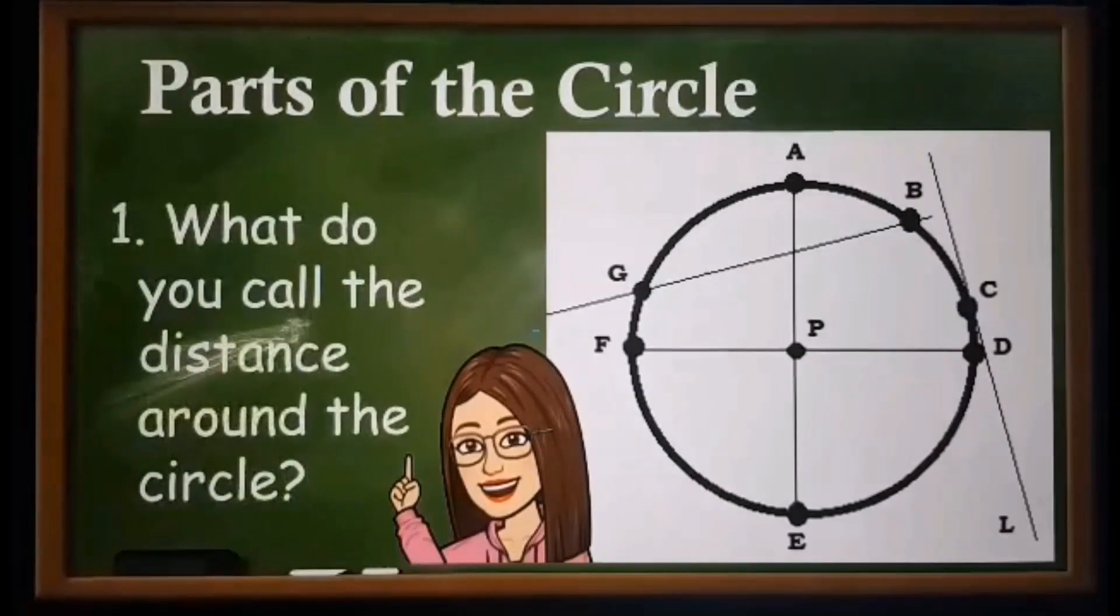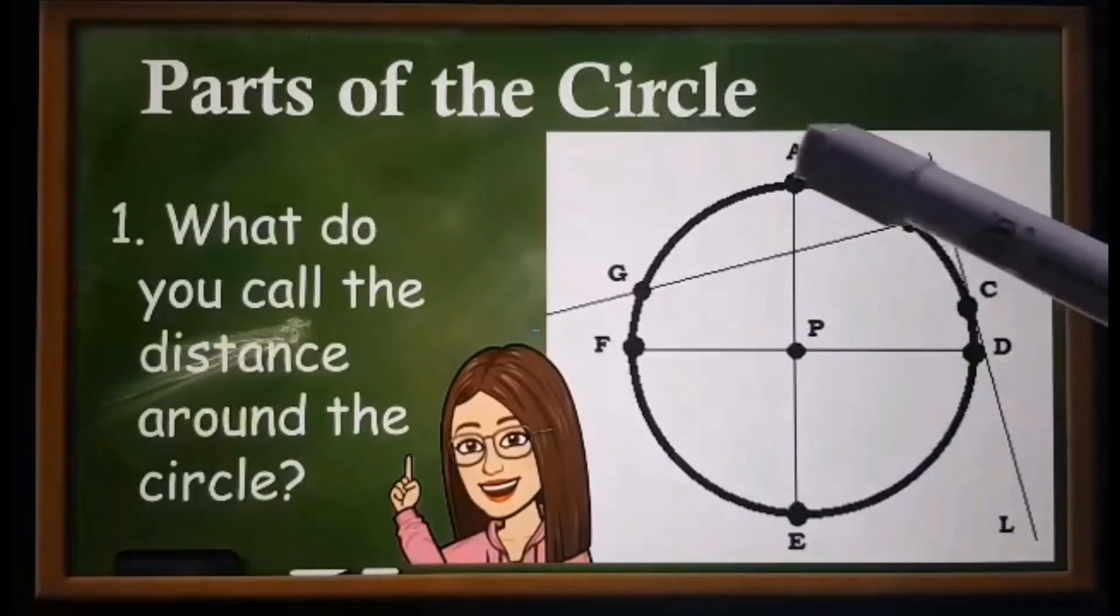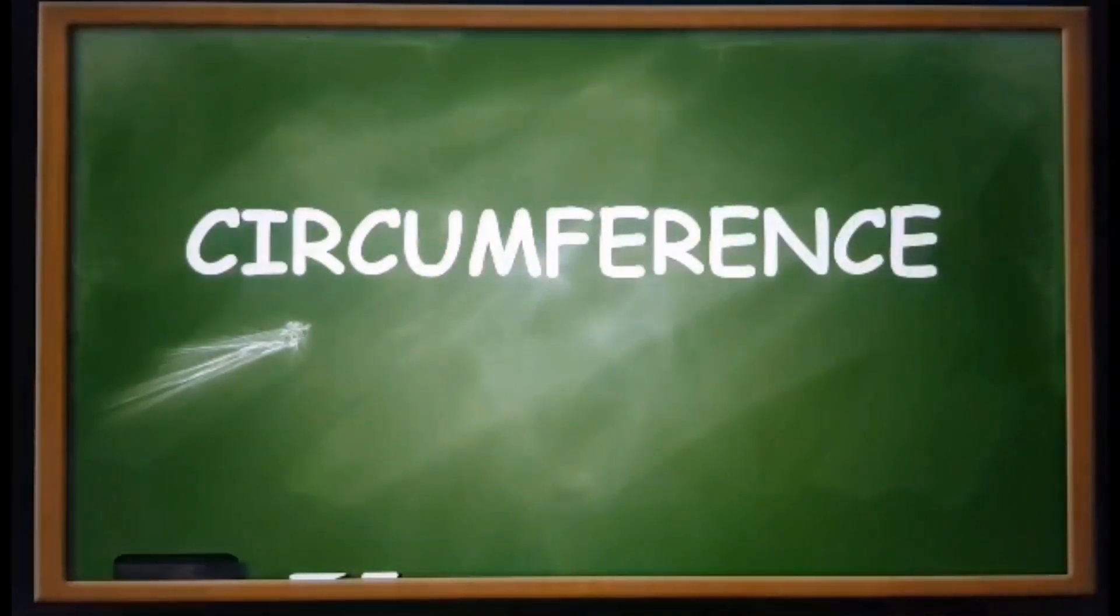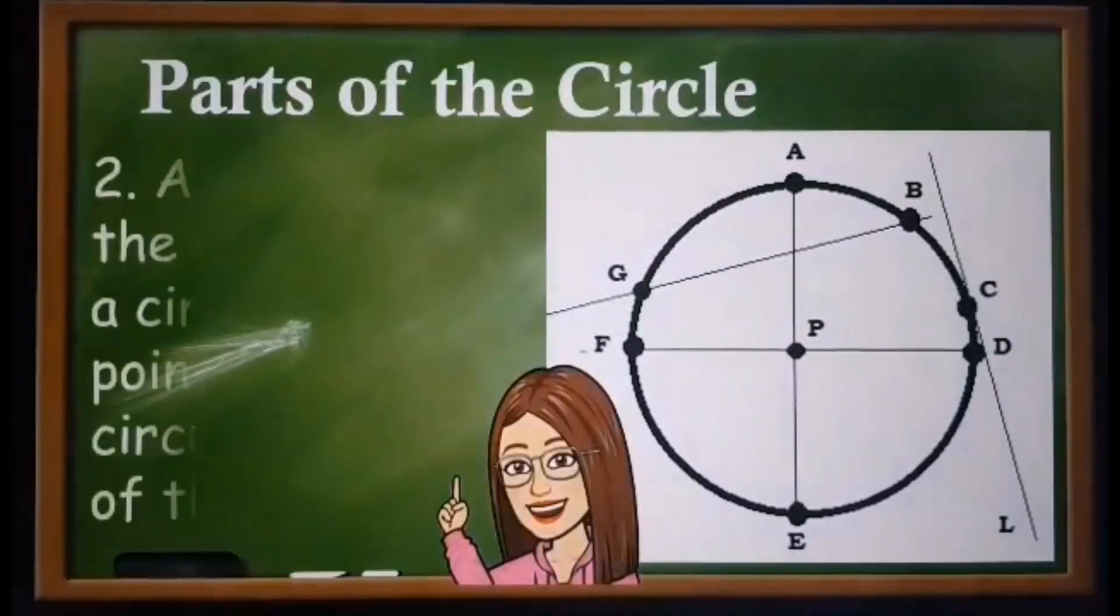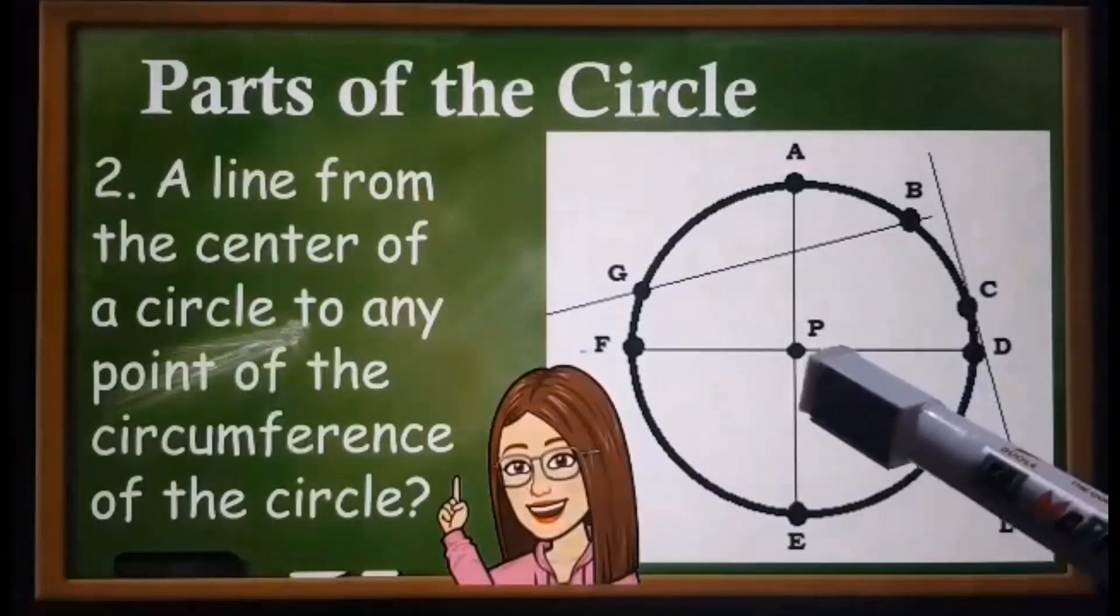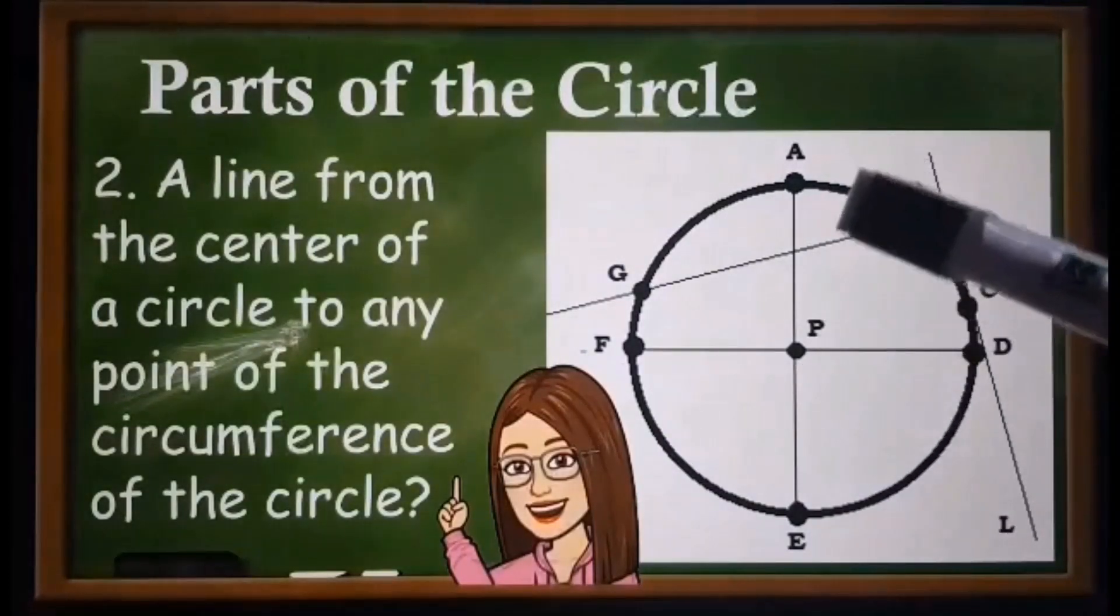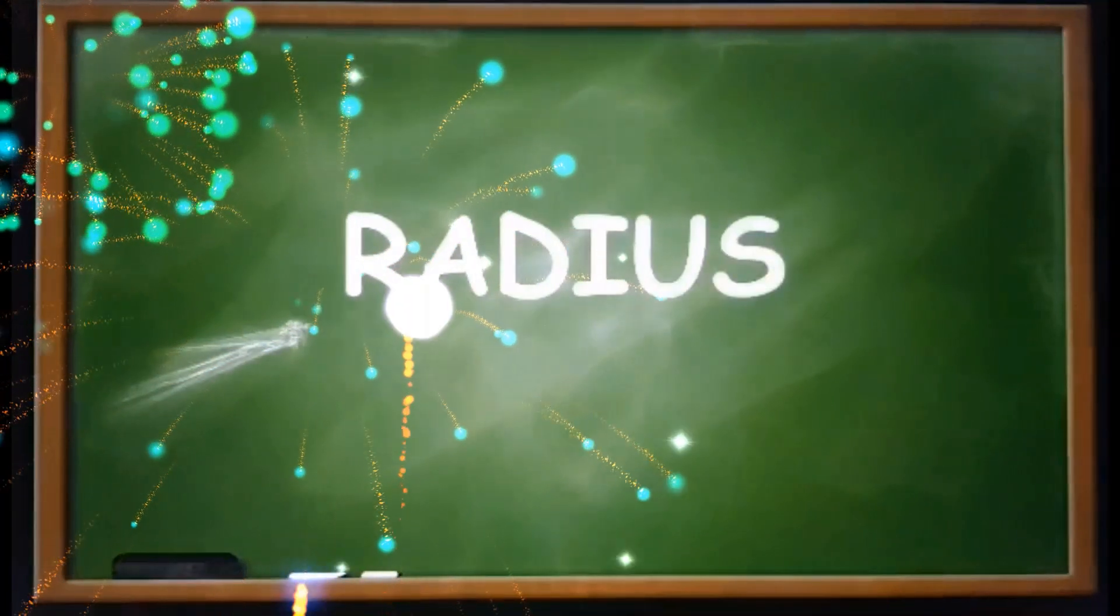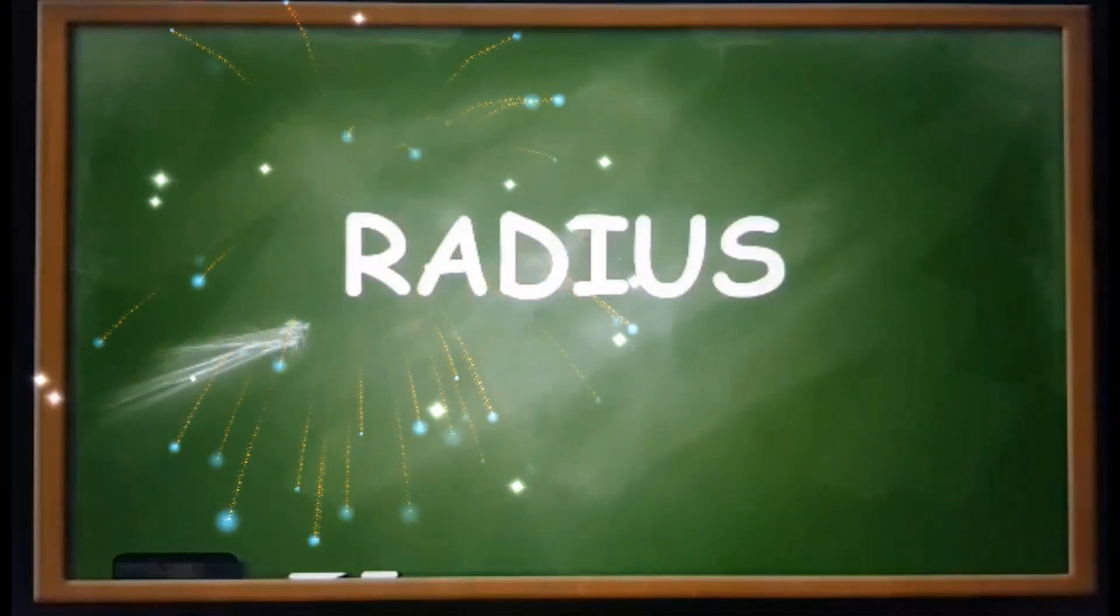I will show you pictures of the parts of the circle and I will give the definition. I want you to identify them. What do you call the distance around the circle? If your answer is circumference, then you are right.